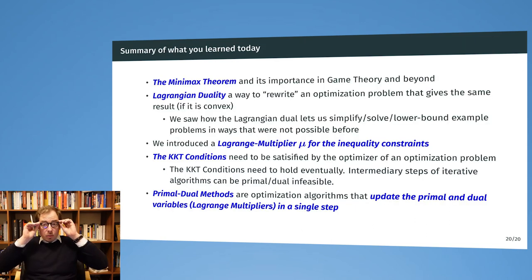In summary, what did we learn today? We saw first the minimax theorem, one of the most important theorems from game theory, and how it applies or can be applied to develop the Lagrangian duality. The Lagrangian duality is a way to rewrite optimization problems in an equivalent way that gives us access to some additional problem structure that we can exploit by simplifying it, reducing some dimensionality, lower bounding the solution, and so on.